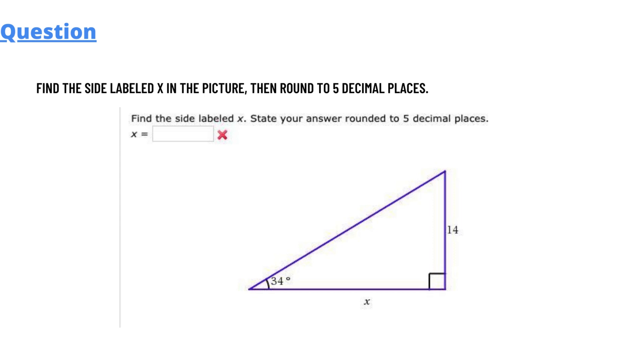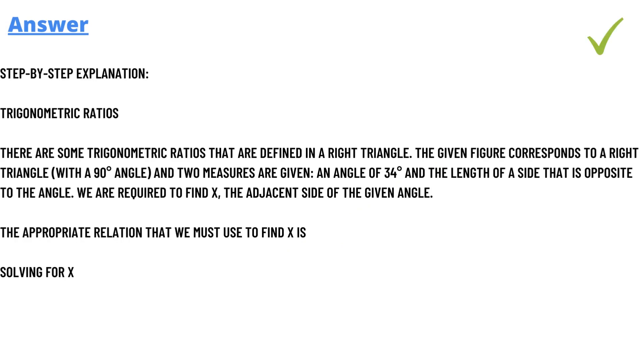This is a trigonometric ratio question. There are some trigonometric ratios that are defined in a right triangle. The given figure corresponds to a right triangle with a 90 degree angle. Two measurements are given: an angle of 34 degrees and the length of the side 14 which is opposite to the angle.